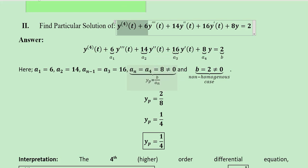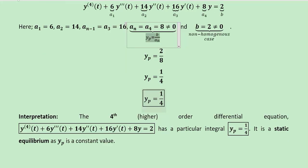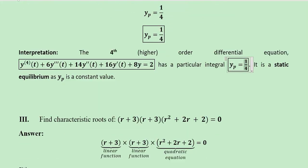The final coefficient a4 is equal to 8 and not equal to 0, so we use the formula taking the quotient b over a4. The value of b is 2 and a4 is 8, giving us the particular integral. The nature of this particular integral shows a static equilibrium because there is no time variable — the equilibrium will remain the same over time.